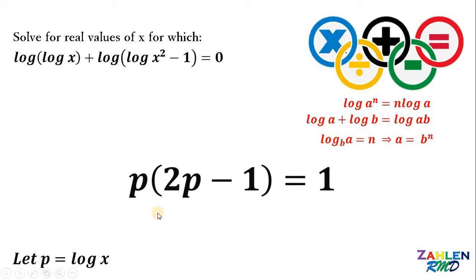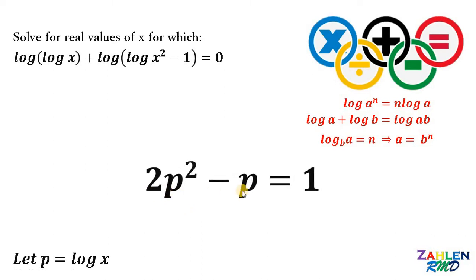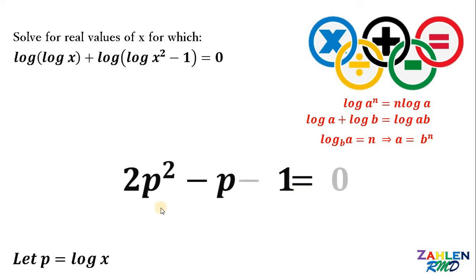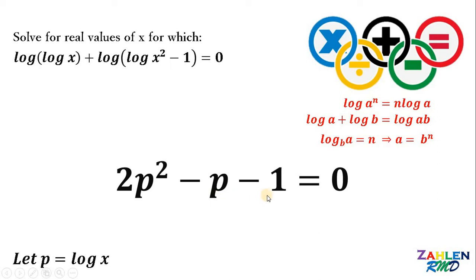So we have the equation p times (2p minus 1) equals 1. Distributing p on the left-hand side gives 2p squared minus p equals 1. Subtracting 1 from both sides, we get 2p squared minus p minus 1 equals 0. Notice that we have a quadratic equation, so we need to factor it to solve for p.